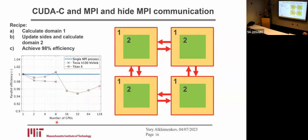Here you can see the performance test — it's a weak scaling test. The x-axis corresponds to the number of GPUs, up to 128 GPUs. The parallel efficiency is about 96-100%, meaning that if you have 10 GPUs, your calculation is 10 times faster.